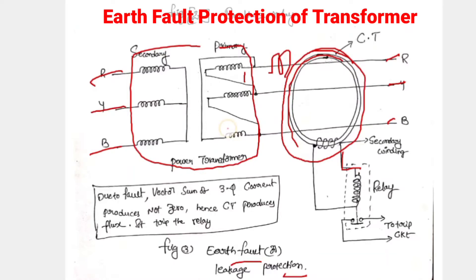We can provide a three-phase CT. It is delta connected — the primary is delta. Whenever a fault occurs, such as an earth fault in the winding, the earth fault relay operates.